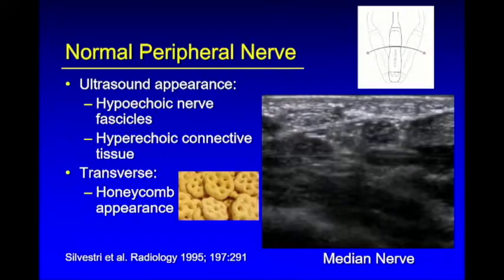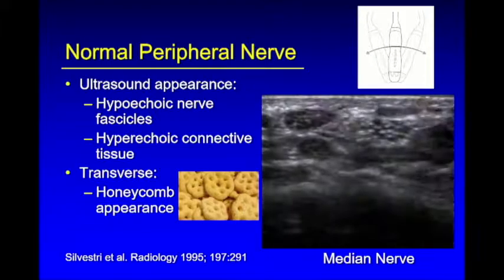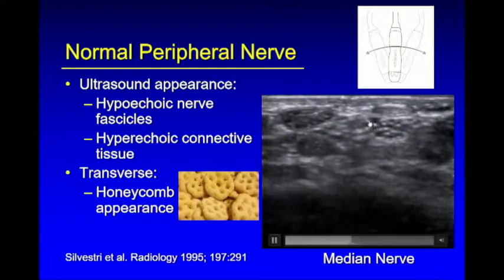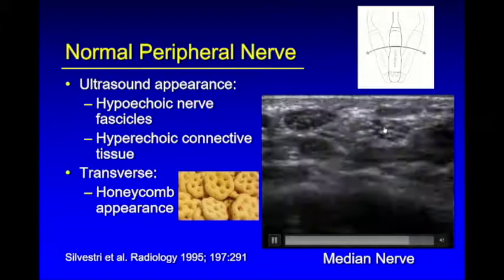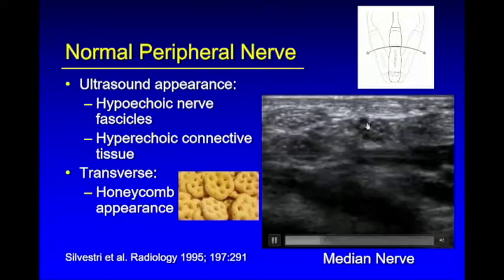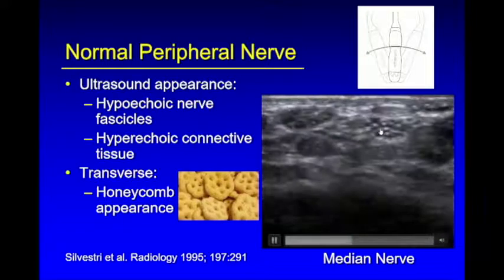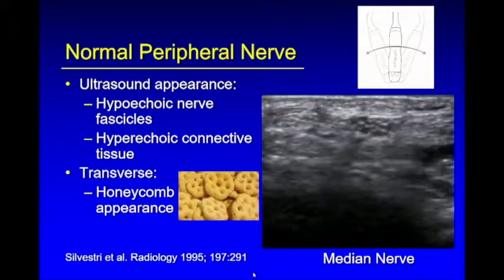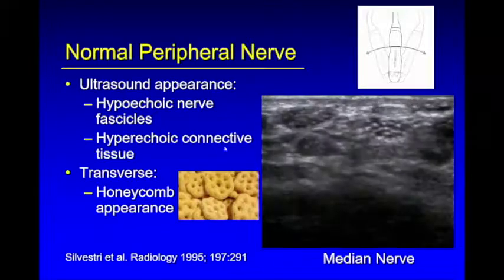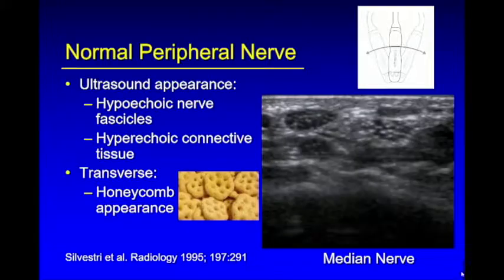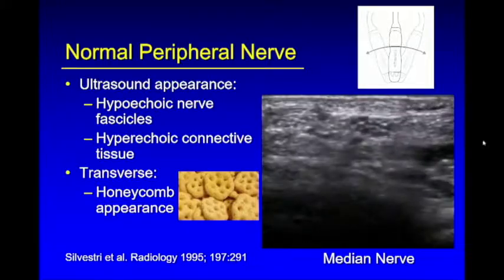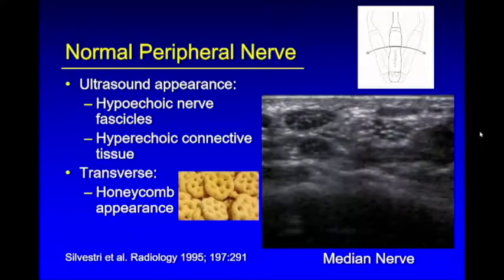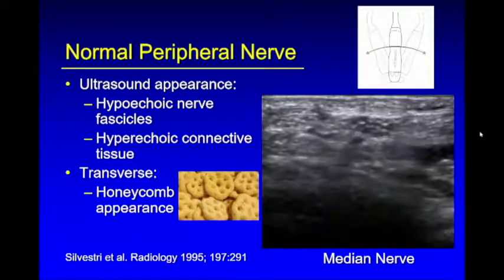When you look at the structure of a peripheral nerve, you'll identify the individual hypoechoic nerve fascicles. Around those fascicles, you'll have the echogenic connective tissue. When you look at the nerves in short axis, you'll have a honeycomb appearance. It's the short axis image that is most characteristic when identifying nerves.